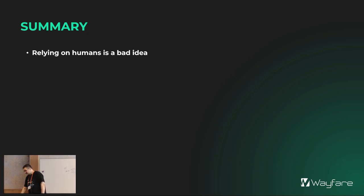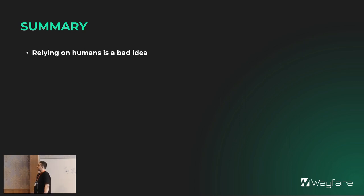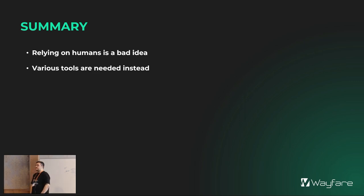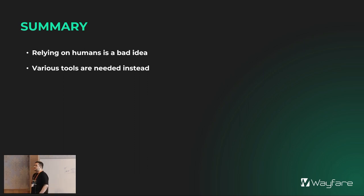In summary, relying on humans is a bad idea. It's fine to go through your code and see if it's slow, but if you want to make statements about a release or an entire feature, you're not going to have a good time. Instead, it makes a lot more sense to start using tooling — there's a bunch of stuff available for Progress and they should be used a lot more often than they are right now.